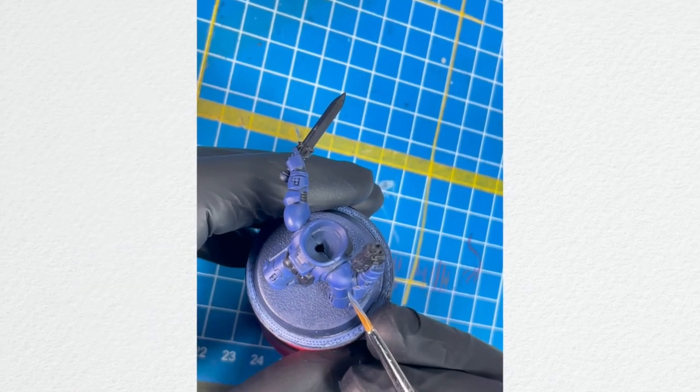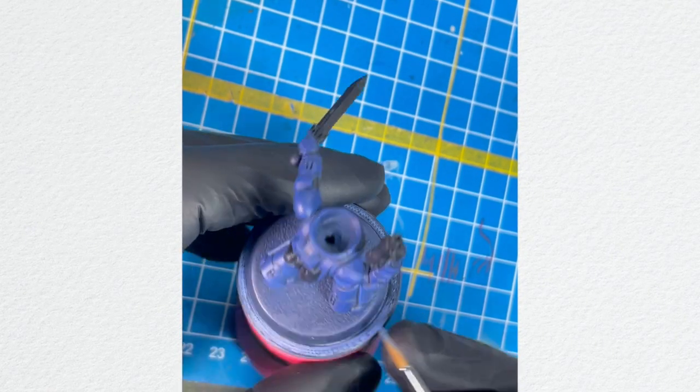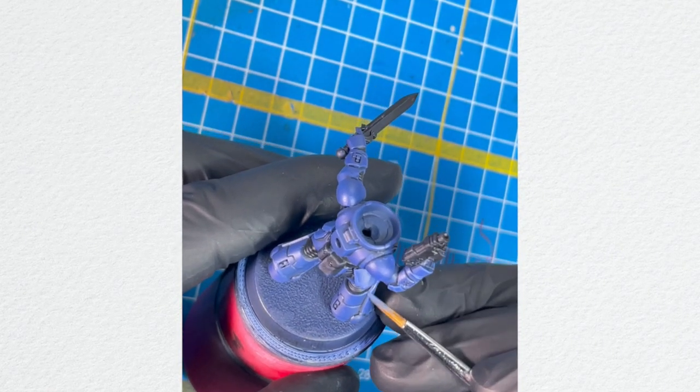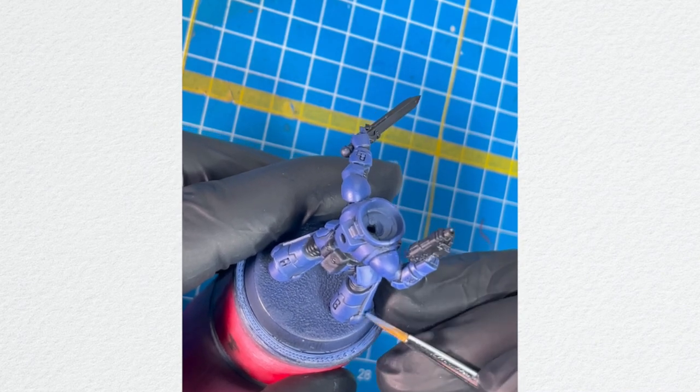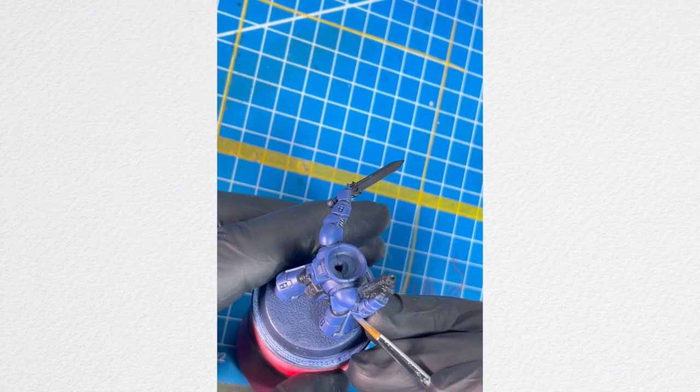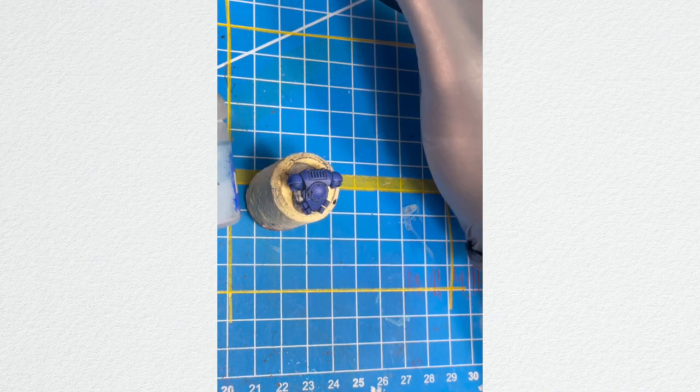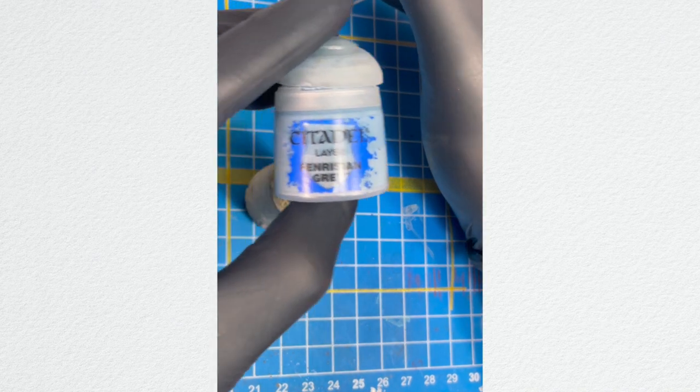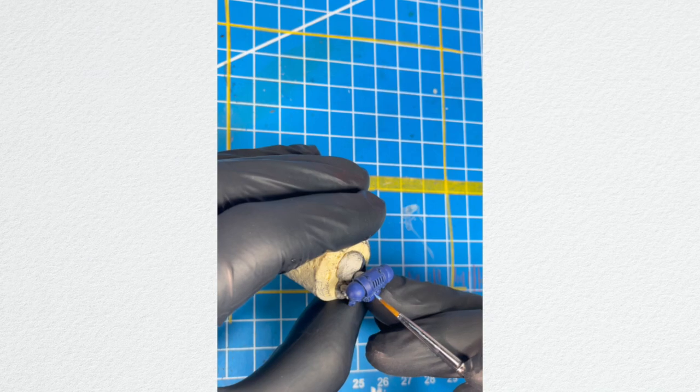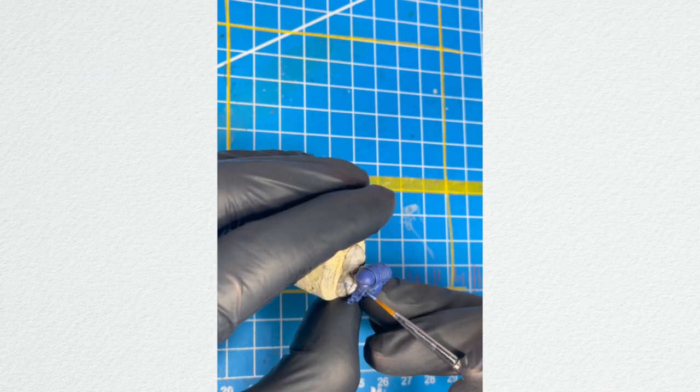And then we're going to follow it using only Calgar Blue, and then the extreme highlight is going to be done using Fenrisian Gray. Okay, our first highlight is here, now time for the second and third. The second highlight is the pure Calgar Blue.